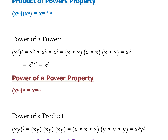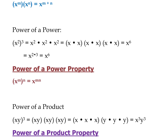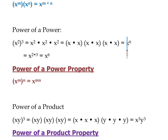Then we have a power of a power — a power raised to another power. For example, x squared to the 3rd. x squared would be x squared times itself 3 times. The parentheses are important — everything in the parentheses is to the 3rd power. So that would be x squared times x squared times x squared, which is x to the 6th. For a power of a power, we multiply the two powers together: 2 times 3 gives x to the 6th.